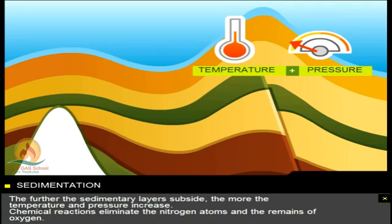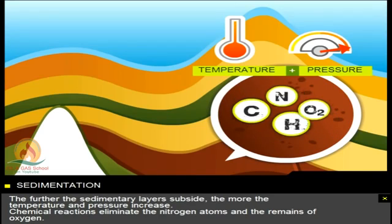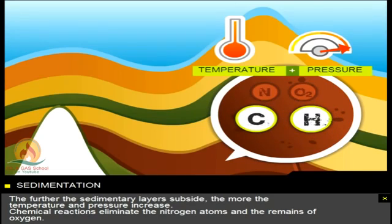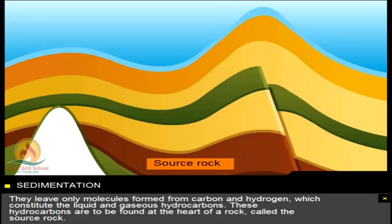The further the sedimentary layers subside, the more the temperature and pressure increase. Chemical reactions eliminate the nitrogen atoms and the remains of oxygen, leaving only molecules formed from carbon and hydrogen, which constitute the liquid and gaseous hydrocarbons. These hydrocarbons are found at the heart of a rock called the source rock.